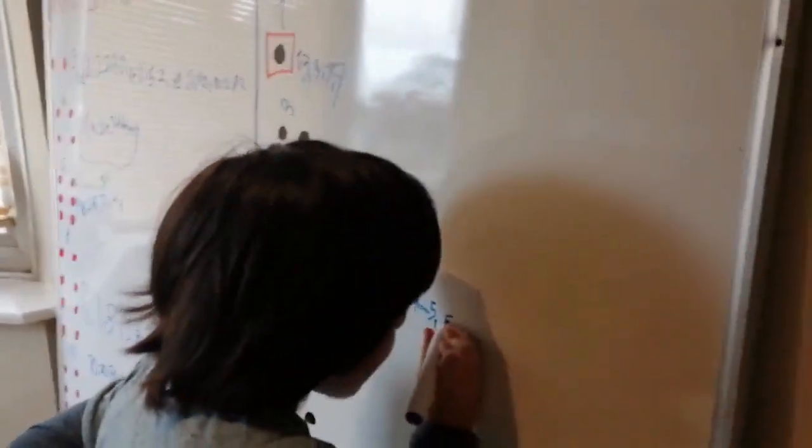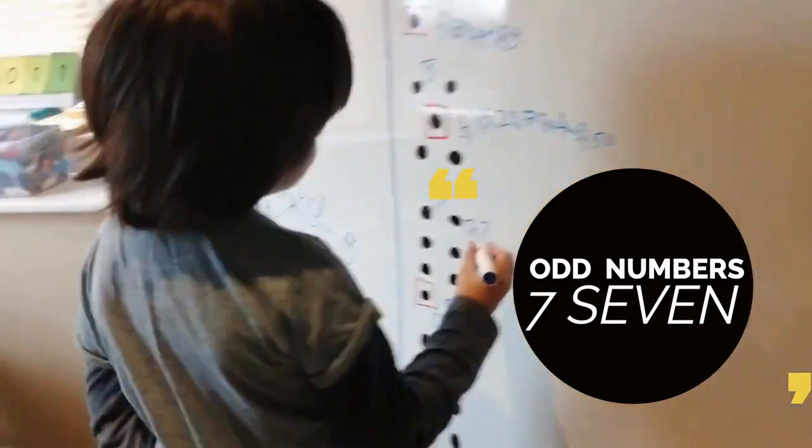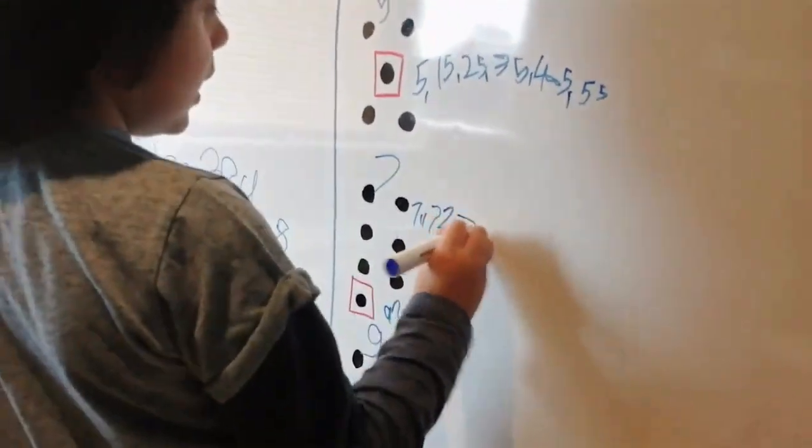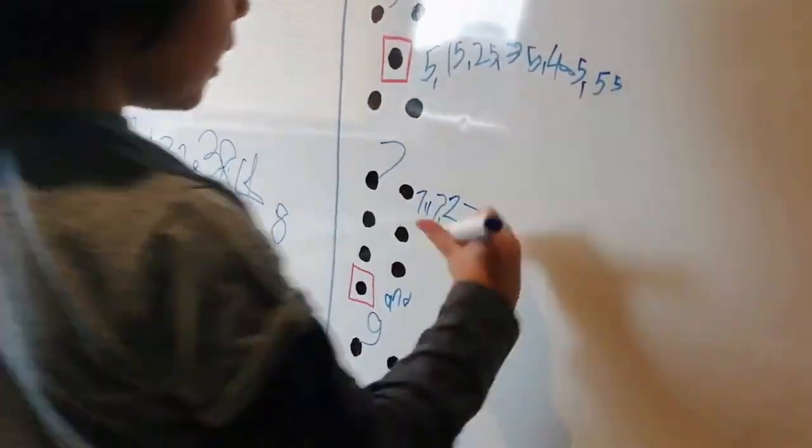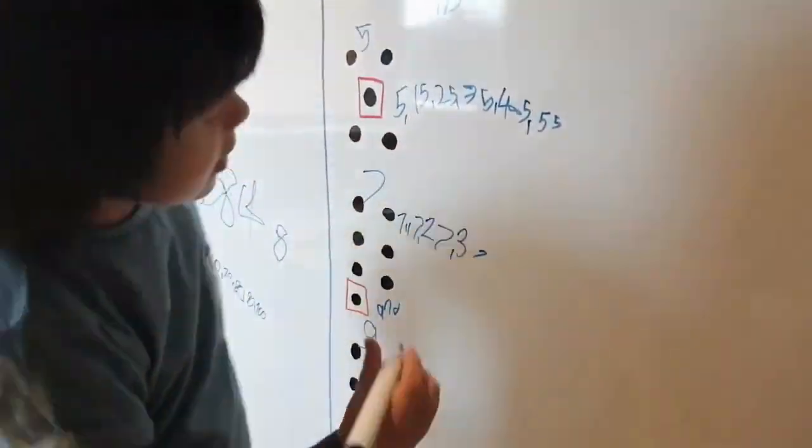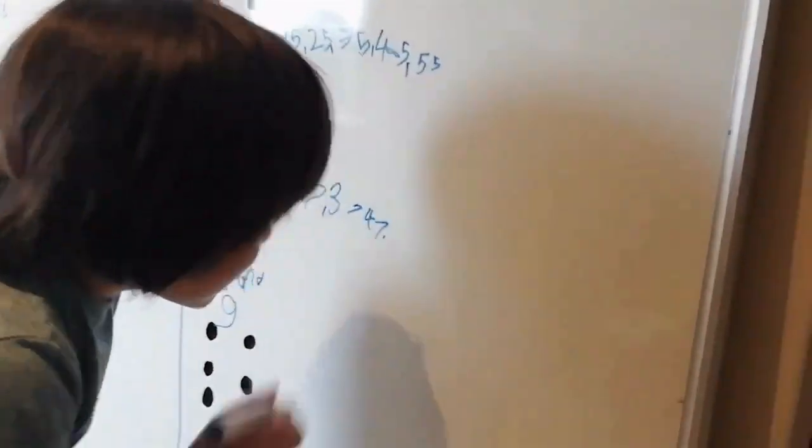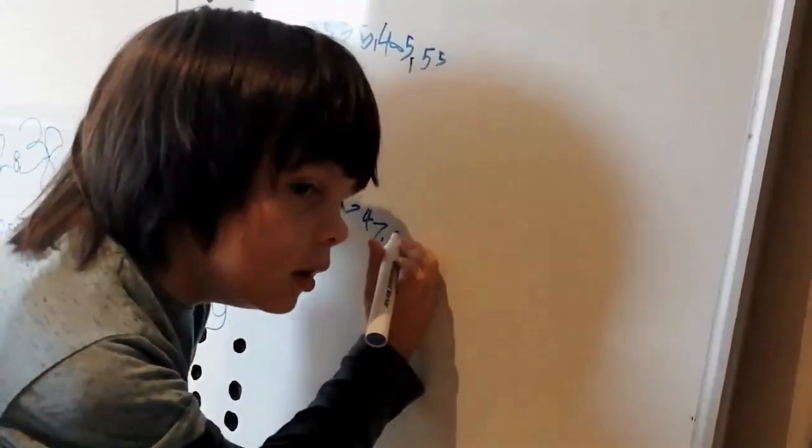So now we go to the seven: seven, seventeen, twenty-seven, thirty-seven, forty-seven, very good. Oh, I forgot the seven: fifty-seven, yeah.